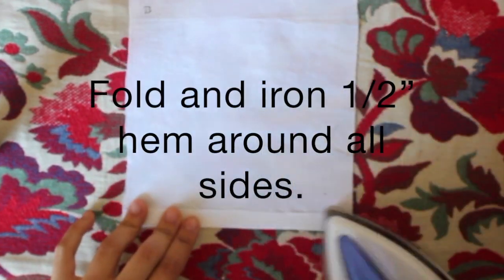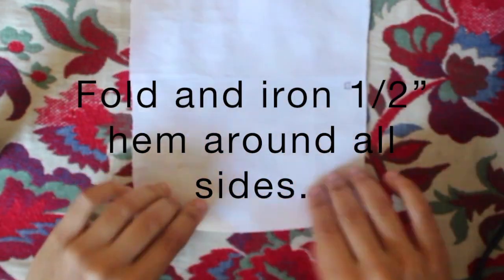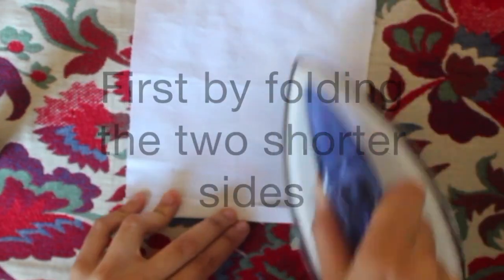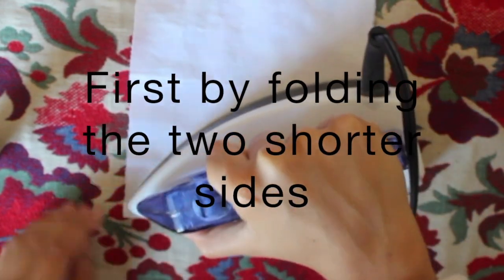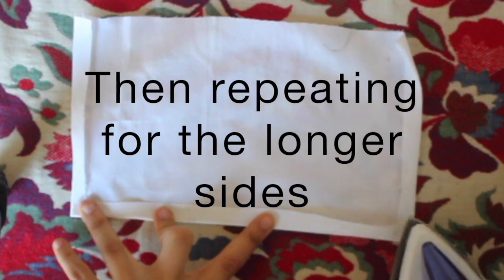Fold and iron half an inch hem around all the sides. First by folding two parallel sides, the shorter sides, and pinning into place. Then repeating for the other parallel sides, the longer sides.